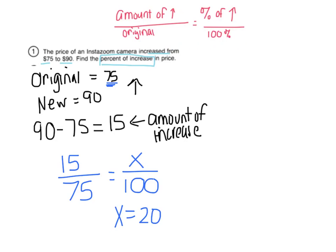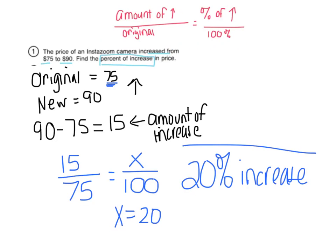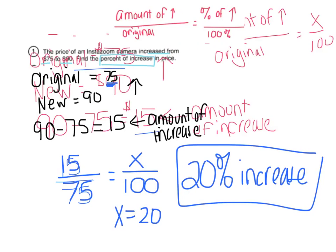So what does that mean? That's a 20% increase — that's how much the camera went up by. You can check: if you take 75 times 0.2, you get $15. That's 20% of 75, which is $15 — that's how much it went up by, and it matches what the problem tells us. So we know we've got the right answer.